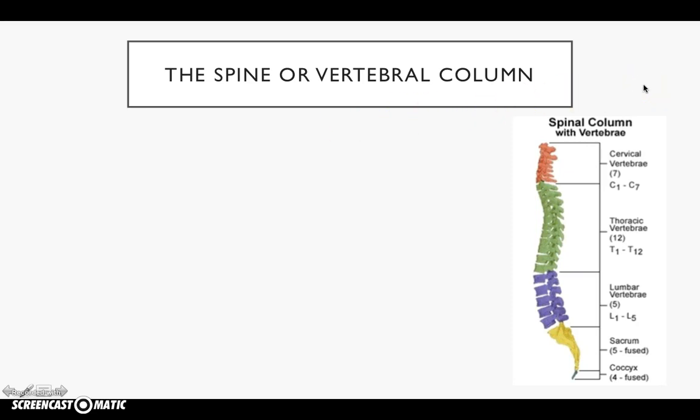The spine or vertebral column. This is made up of 33 irregular bones overall. The irregular bones, these are complex bones. So there's five regions we need to learn.